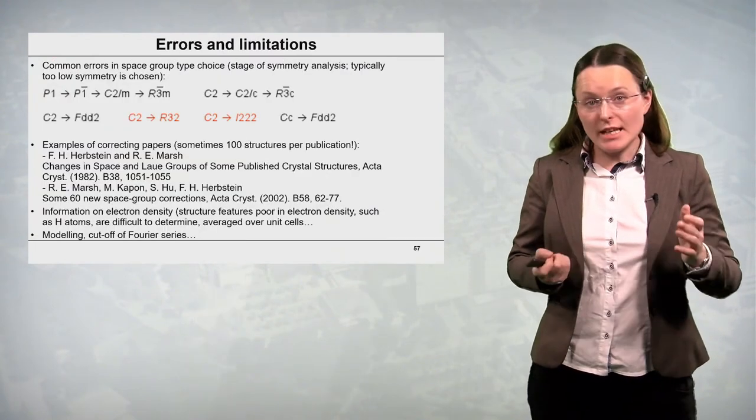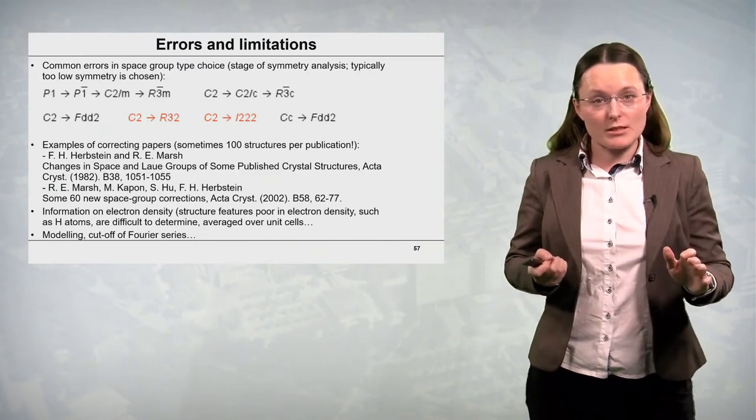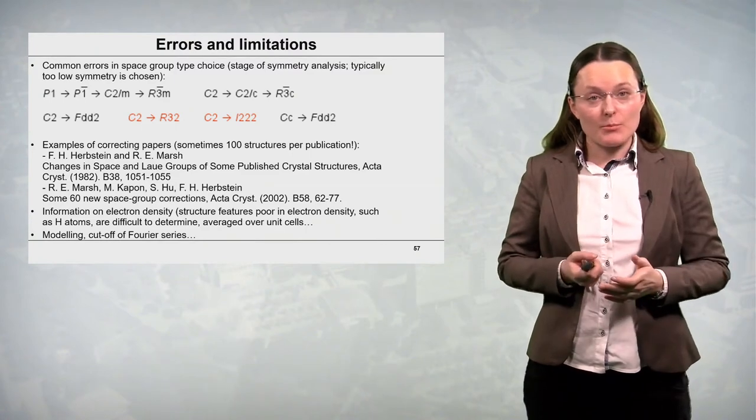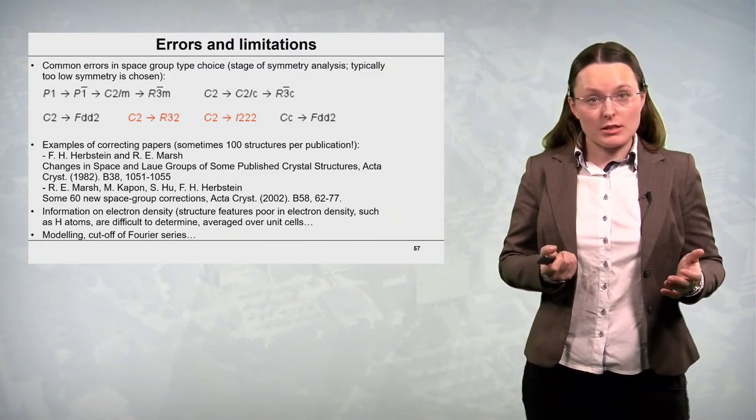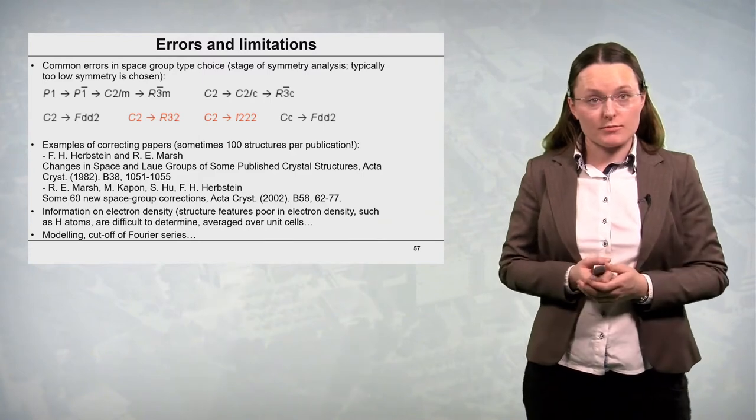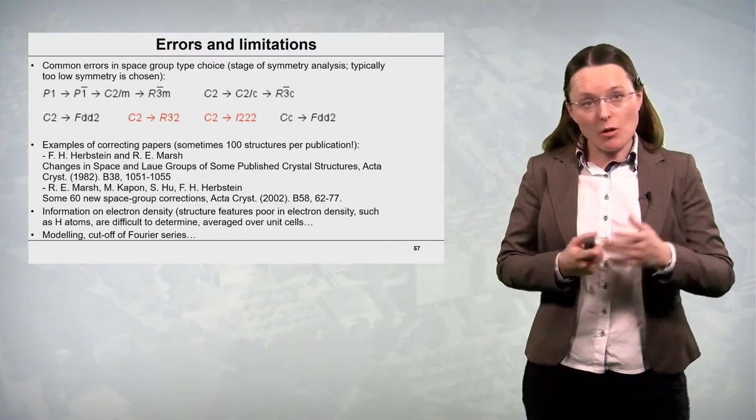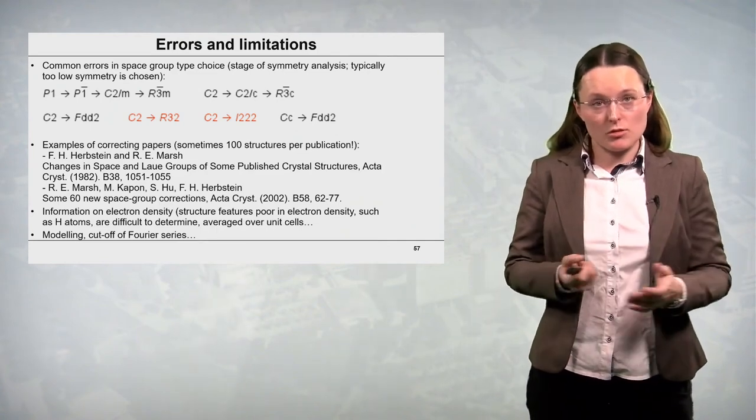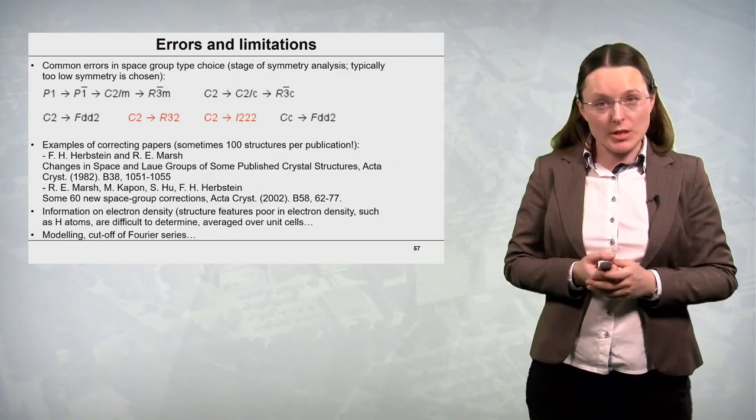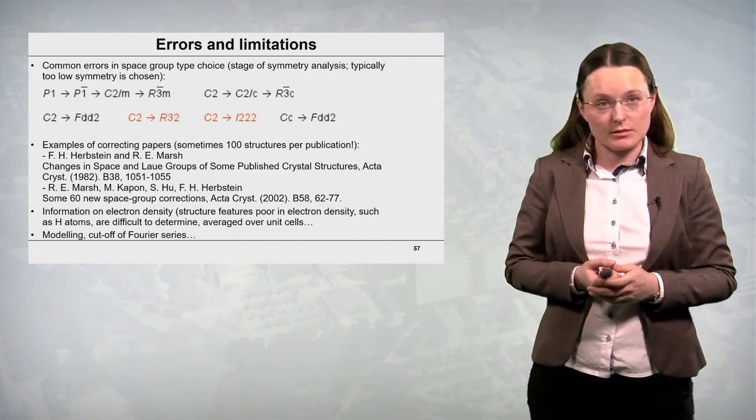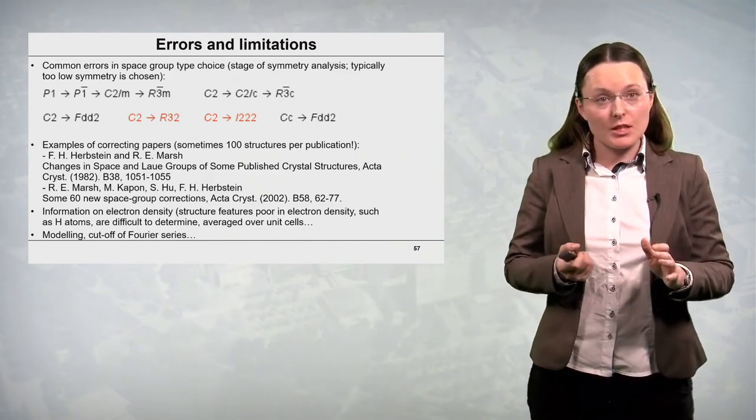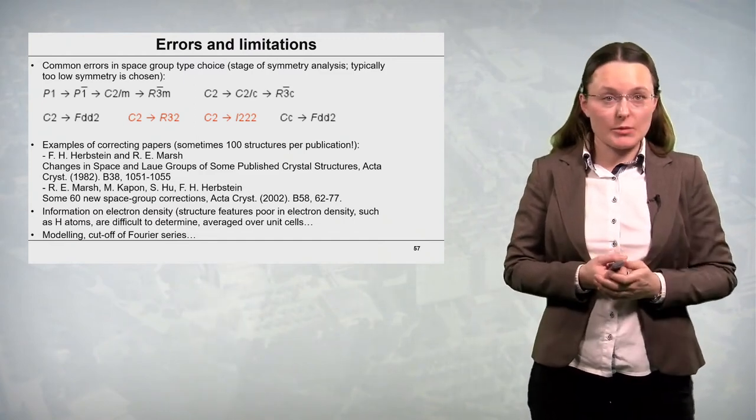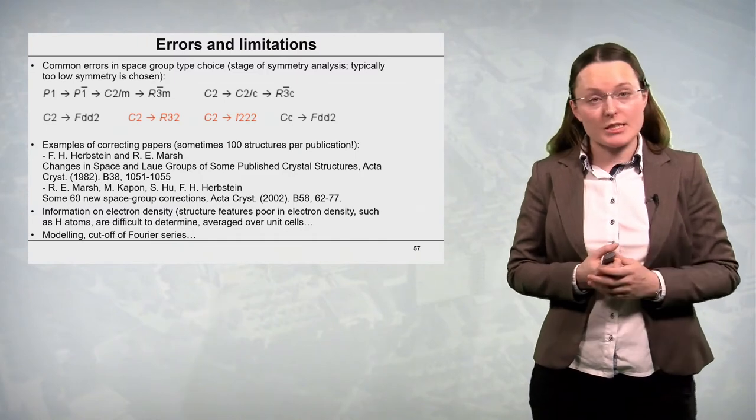So we have to realize that there are many pitfalls in X-ray diffraction structure analysis. And in fact many structures with errors have been actually published. So the common errors in structure determination are in space group type choice. This is the stage of symmetry analysis of the diffraction pattern. Typically too low symmetry is chosen then. And on the slide you have some examples of confused space group types.